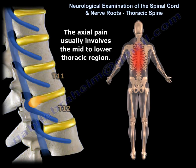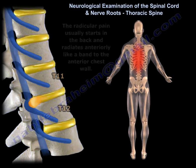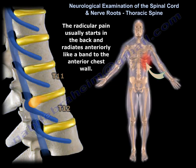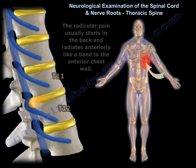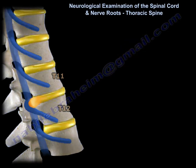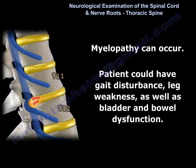Axial back pain or chest pain is a common finding, usually involving the mid to lower thoracic region. The radicular pain usually starts in the back and radiates anteriorly like a band to the anterior chest wall, running along the course of the intercostal nerve and going anteriorly towards the ribs.